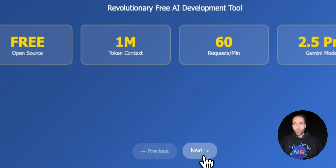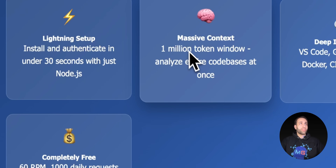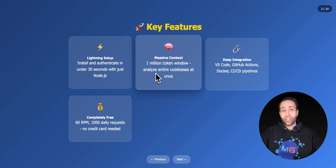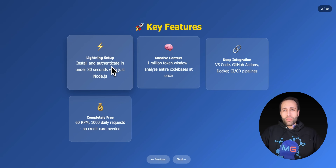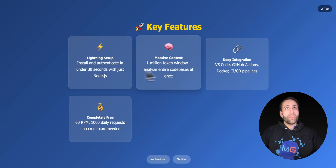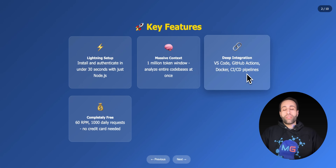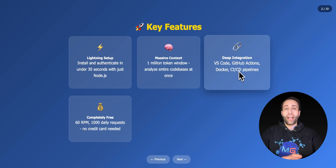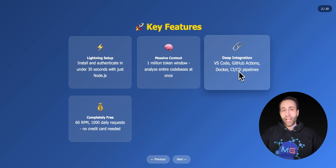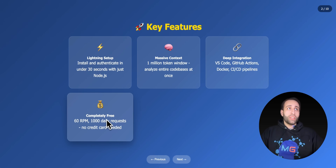The key features: a massive 1 million token context window — great for analyzing entire codebases. It's very easy to install, taking about one minute. It integrates beautifully with VS Code, GitHub Actions for automating git tasks, Docker, and CI/CD. I'm using Google Cloud Workstation, but you can also use your local laptop — Linux or Windows. It's completely free: 60 requests per minute, 1,000 daily, no credit card needed.